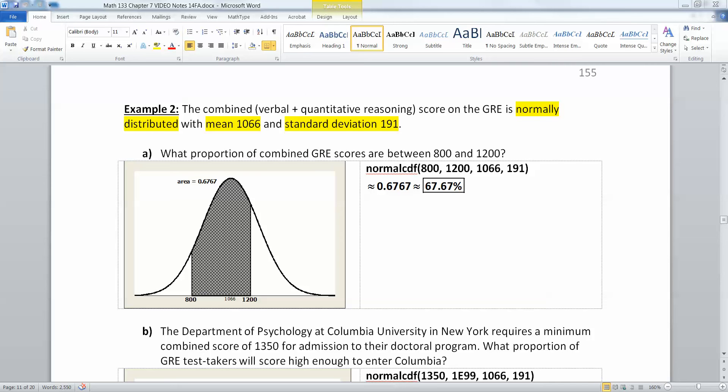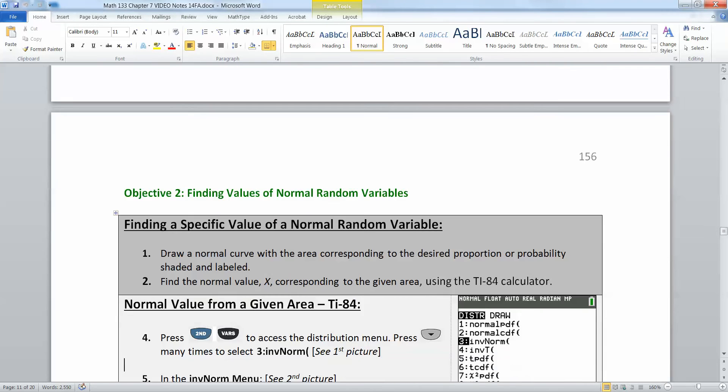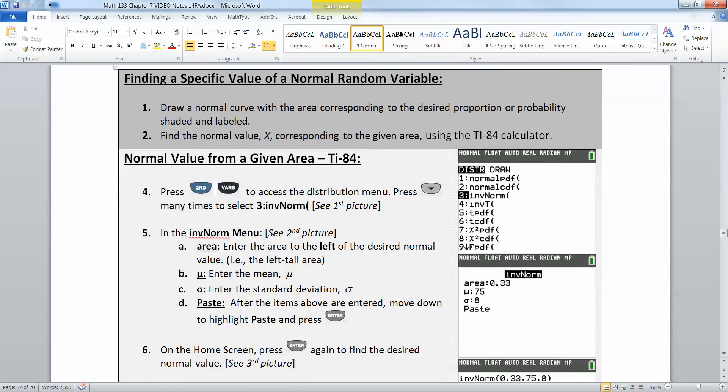So we have learned how to find the area under a normal curve given either a value or a couple different values. We could shade the area and then find it using normal CDF. So it makes sense that we're going to want to invert that process and go backwards. Instead of being given two x values, find the area. What if you want to find the x value from the area? In other words, you're given the area and you're looking for the x values, the data values that would correspond to that.